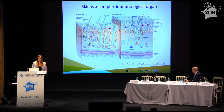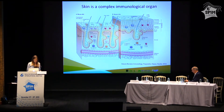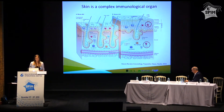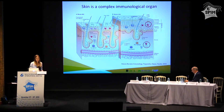Besides these immune cells, the skin is covered with commensal bacteria or fungi, and these commensals can also beneficially contribute to the outcome of immune responses within the skin. In our group, we focus on the role of T cells within the skin, and a lot of knowledge regarding T cell function in the human immune system has been obtained from murine studies.